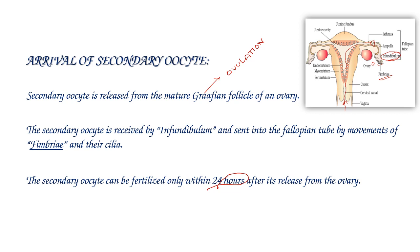The movement of fimbriae and the cilia lining the fallopian tube moves the ovum towards the ampullary-isthmic junction. For successful fertilization, both sperm and ovum must simultaneously travel to this site. Additionally, the ovum lifespan is only 24 hours after its release from the ovary.